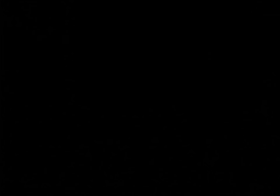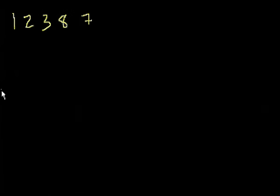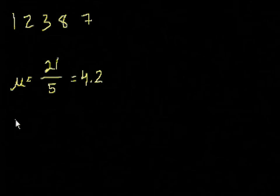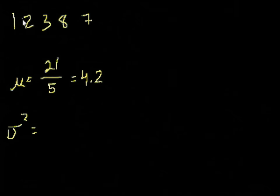Let's calculate with actual numbers. Say we have the data set: 1, 2, 3, 8, and 7, and let's say this is a population. The mean is 1 plus 2 plus 3 plus 8 plus 7 equals 21, divided by 5 data points, which equals 4.2. Now we want to figure out the variance, assuming this is the entire population.